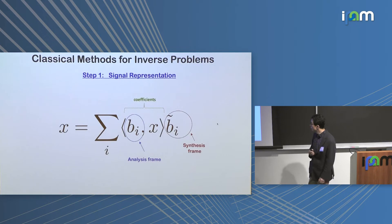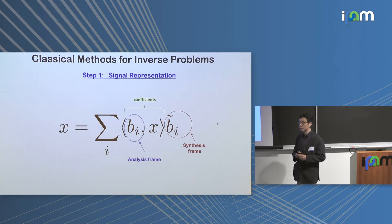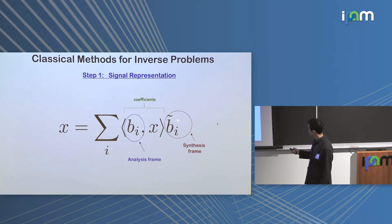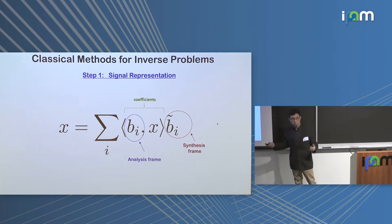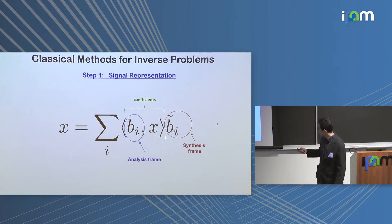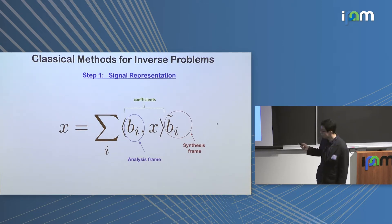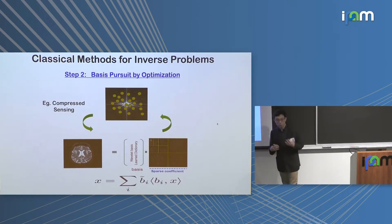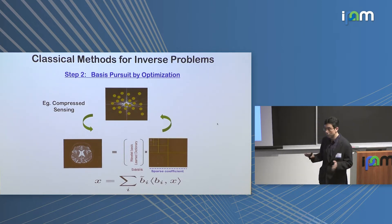To understand this, you go back to classical approaches for inverse problems. The first step of classical signal processing starts with signal representation. Let's say X is the image you want to reconstruct — usually represented as a linear expansion, a linear combination of a synthesis frame with coefficients. The coefficients are calculated as inner products between the analysis frame and the image itself. One of the most important discoveries in the signal processing community is that not all coefficients are non-zero.